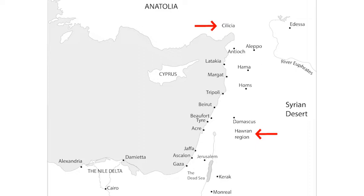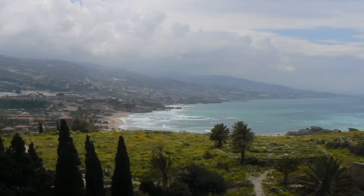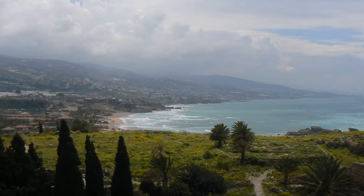In this next photograph you can see this very much in practice — what we're looking at here is the Lebanese coast looking south from the town of Jebel. In the medieval period this was part of the county of Tripoli, and you can see not only the very fertile agricultural coastal strip but also how quickly the land begins to rise up towards the Lebanese mountains.